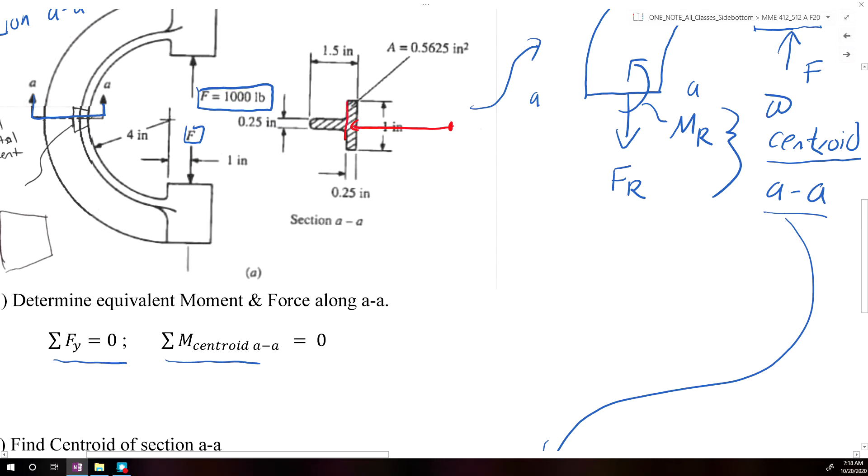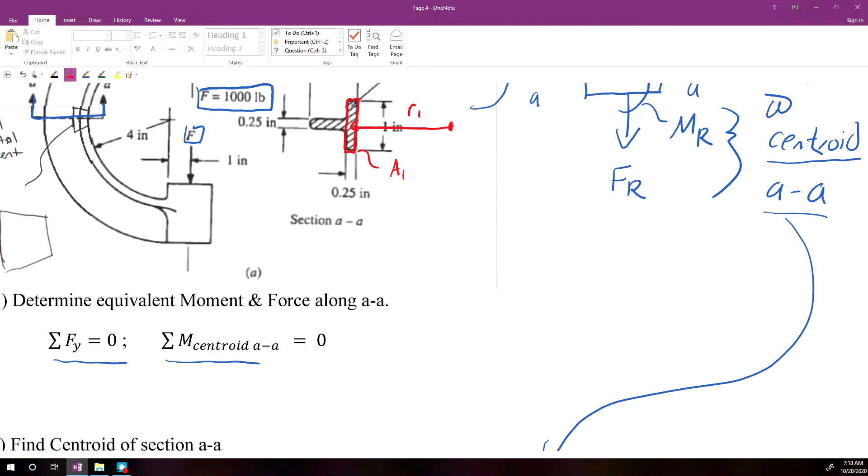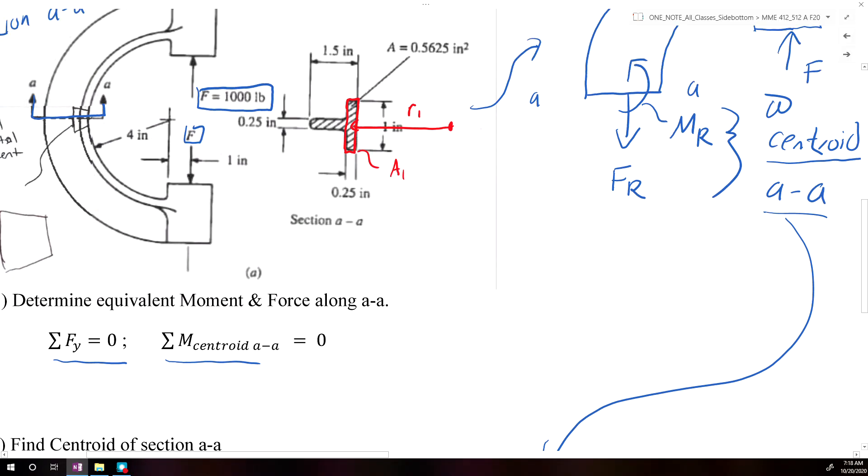So if we look at our section here, we have two areas. We have one area, so I'll call this R1 and A1, and then we have a second area here, which I would call R2 and A2.